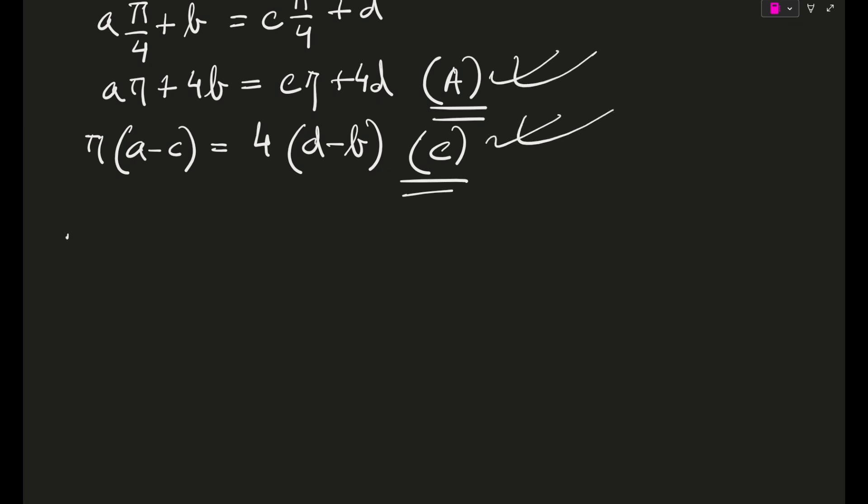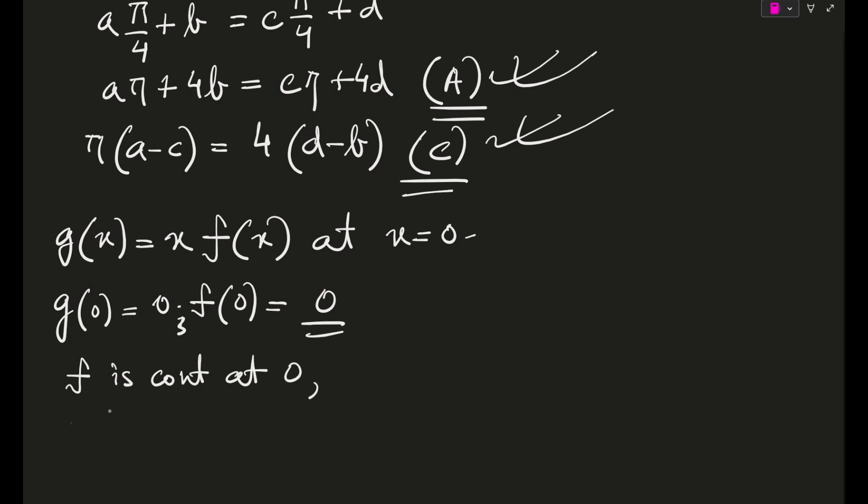So guys, there was a function g of x. This is a really small question I know, but still let's solve. g of x is equal to x times f of x at x is equal to 0, right? Okay, so if g of 0 is equal to—I'm sorry, g of 0 is 0 into f of 0, so yeah it is coming out to be 0 only.